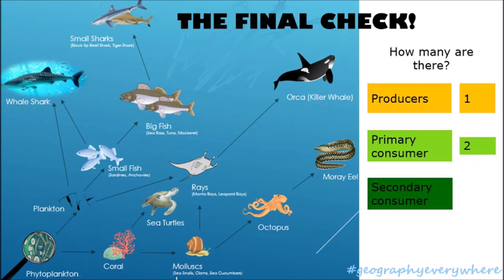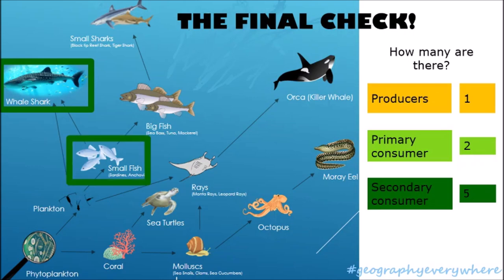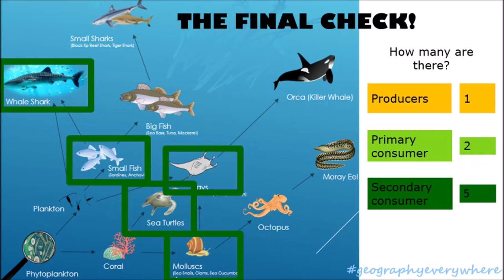How many secondary consumers are there? There are five. There's the whale shark, which eats the plankton; the small fish, like sardines and anchovies, that also eat plankton; sea turtles, which eat the coral; molluscs, which also eat coral; and rays, which eat plankton too.